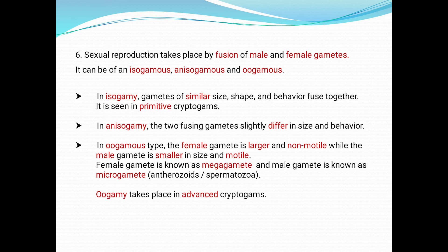In oogamy, the female gamete is larger and non-motile, while the male gamete is smaller in size and motile. The female gamete is known as megagamete and the male gamete is known as microgamete, because mega refers to large and micro refers to small. The male gamete is also known as antherozoids or spermatozoites.